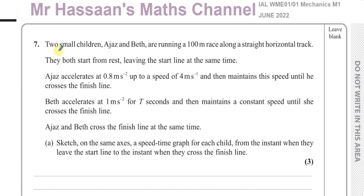Here we're told about two small children, Ajaz and Beth, who are running a 100m race along a straight horizontal track. They both start from rest, leaving the start line at the same time. Ajaz accelerates at 0.8 m/s² up to a speed of 4 m/s and then maintains this speed until he crosses the finish line. Beth accelerates at 1 m/s² for T seconds and then maintains a constant speed until she crosses the finish line.